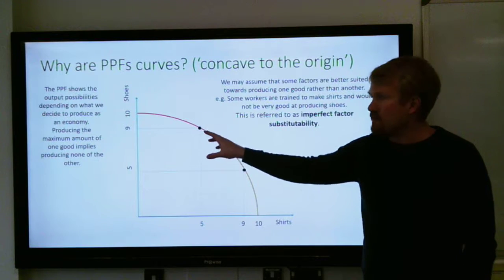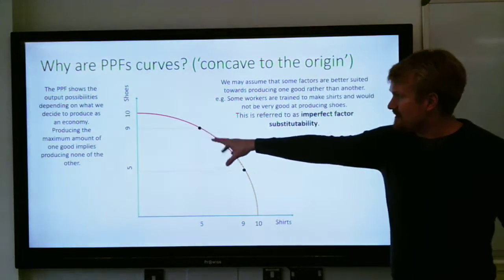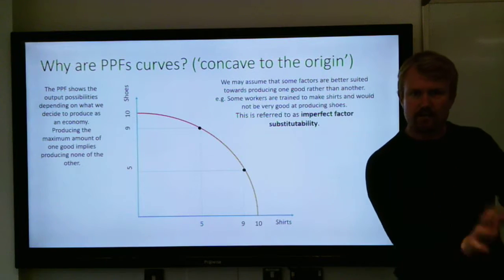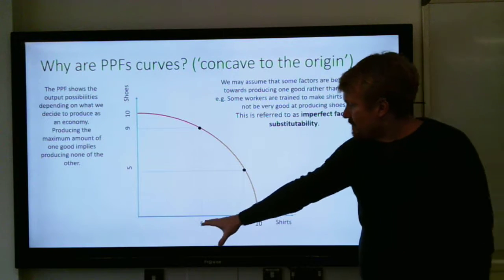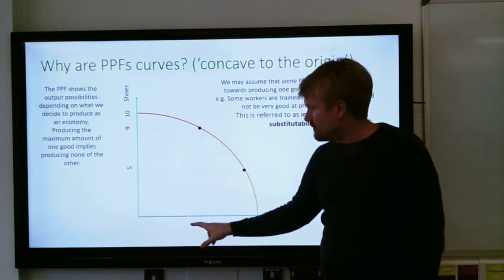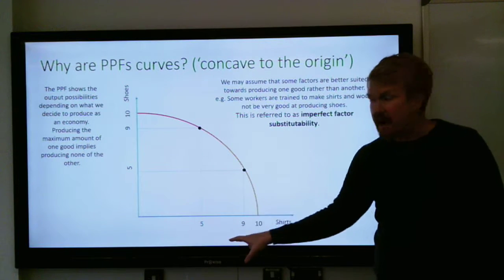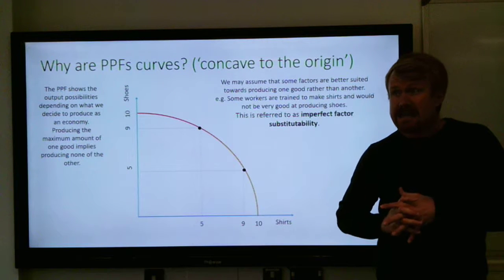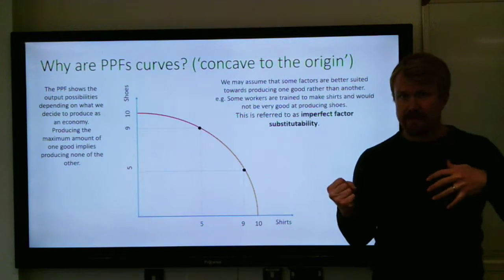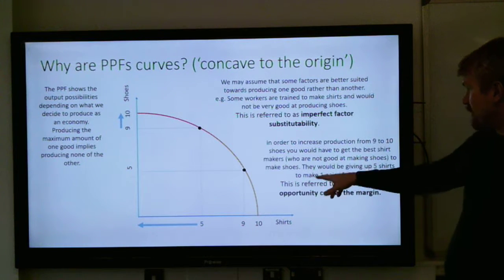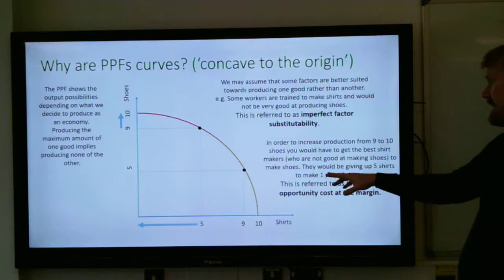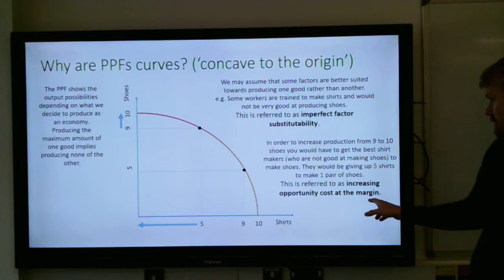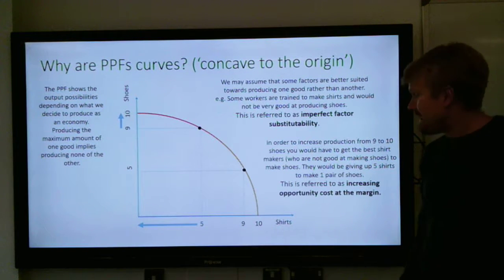The reason why the PPF is concave to the origin is that to say we're only going to make shoes means telling those people who are the best shirt makers that we don't want them to make shirts anymore — we want them to quit what they're really good at and make shoes, which they're not so good at. By moving them off shirts and onto shoes, you're giving up all the expertise in making shirts, so you lose five shirts in order to gain just one shoe.